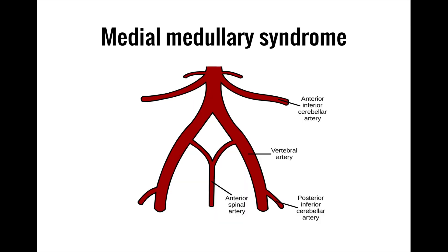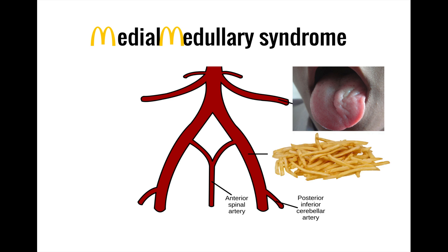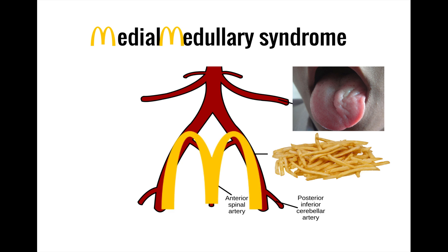On test questions, you may be asked to identify what artery is likely involved. Medial medullary syndrome is typically caused by a stroke in the anterior spinal artery. To link medial medullary syndrome, the anterior spinal artery, and the clinical findings of tongue weakness and other motor findings, focus on all the M's in 'medial medullary' and think of the McDonald's arches. You use your tongue to eat hamburgers and fries, and the golden arches resemble the anterior spinal artery itself.